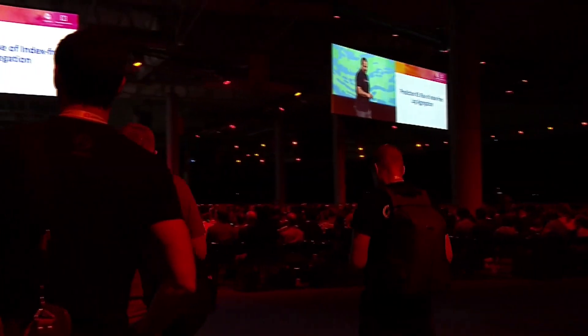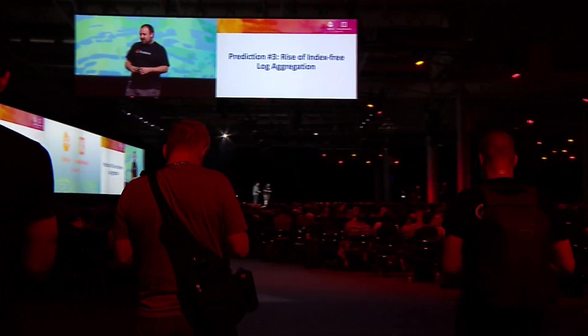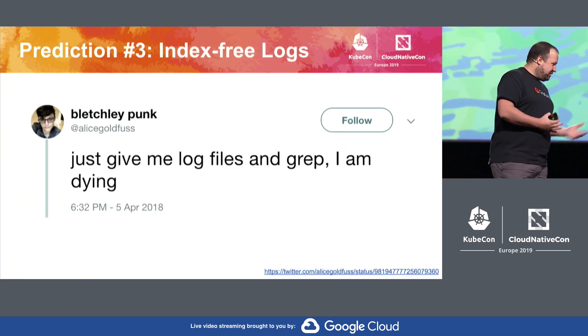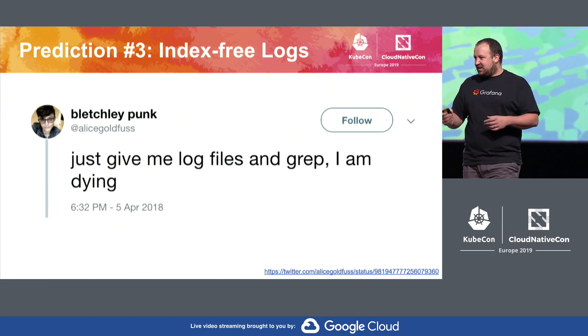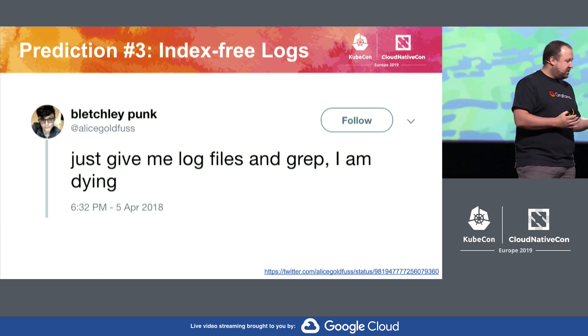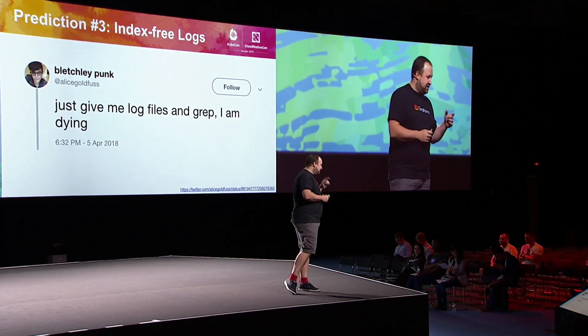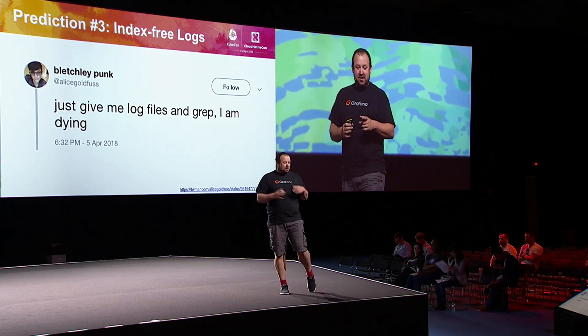Prediction number three: the rise of index-free log aggregation. We've been seeing this develop over the last six months to a year. A lot of people have been saying things like, just give me log files and grep. Systems like Splunk and Elasticsearch give us a tremendous amount of power to search and analyse our logs, but all of this power comes with a lot of complexity and expense. Before Splunk and Elasticsearch, logs were just stored as files on disk, and you would just go and grep them. I think we're starting to see the desire for simpler, index-free log aggregation systems — effectively, everything old is new again.